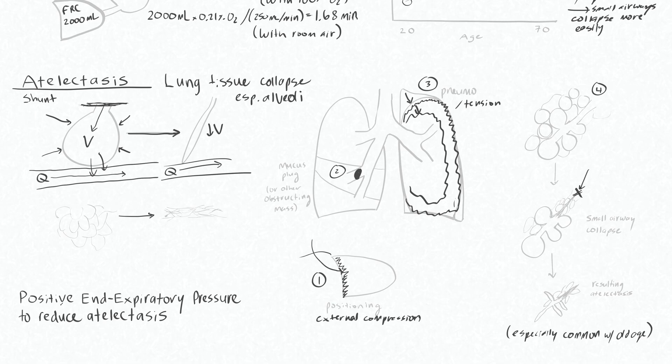What we can do to counteract atelectasis, or collapse of these alveoli, is by using positive end expiratory pressure. This is PEEP, and you'll be hearing lots about this. This reduces atelectasis by essentially stenting open the alveoli with positive pressure. That works very well to counteract atelectasis.